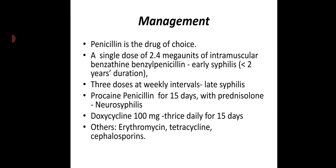Management: penicillin is the drug of choice for all stages. A single dose of 2.4 mega units of intramuscular benzathine penicillin can be given in early syphilis (less than two years duration). In late syphilis, the same dose — benzathine penicillin 2.4 mega units IM — should be given as three doses at weekly intervals. Oral penicillin can also be used for about 15 days. In neurosyphilis, procaine penicillin for 15 days along with steroid prednisolone should be given.